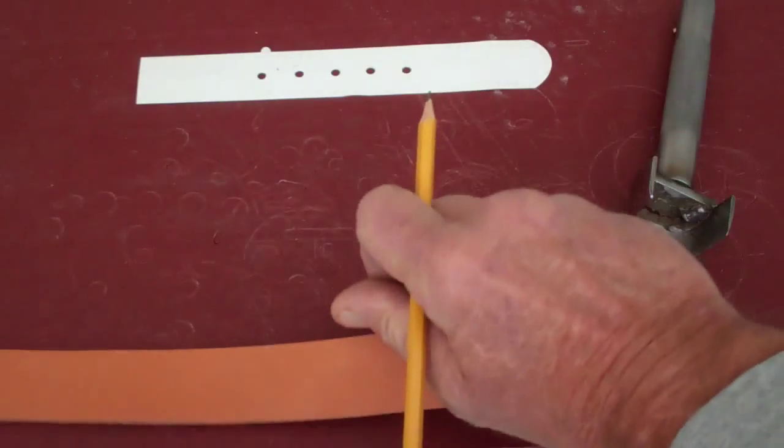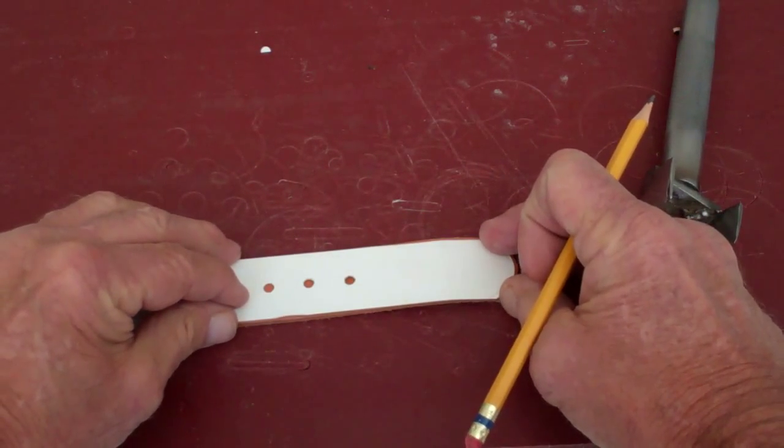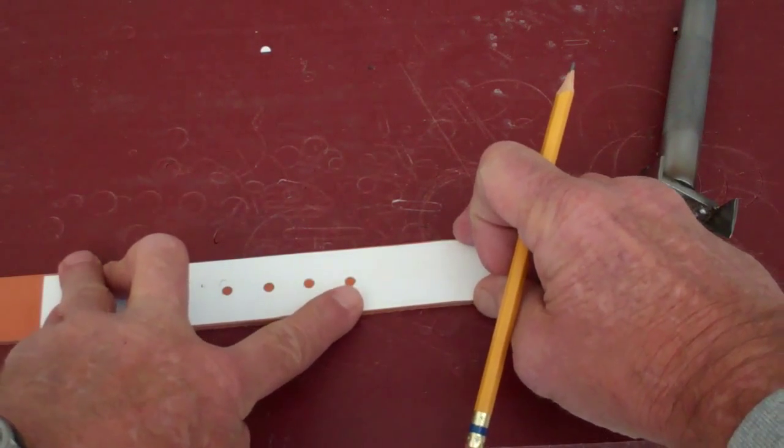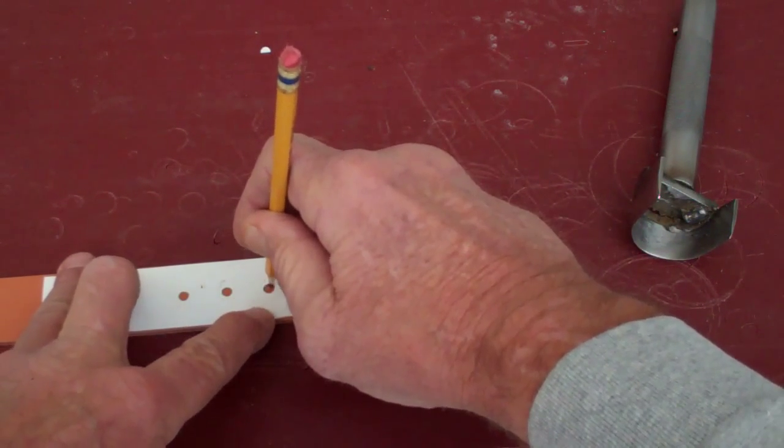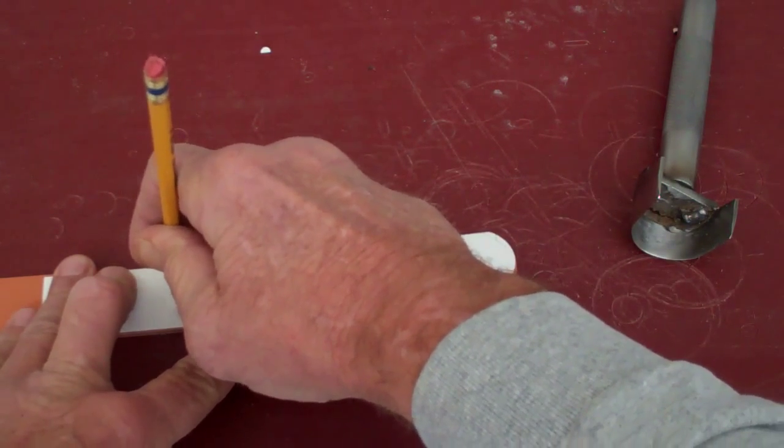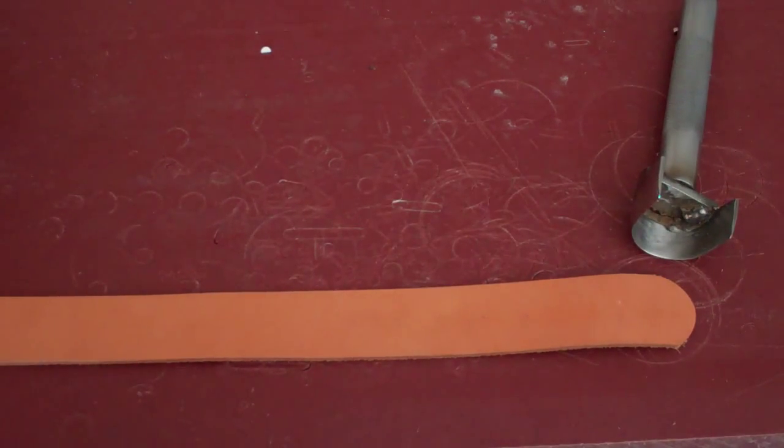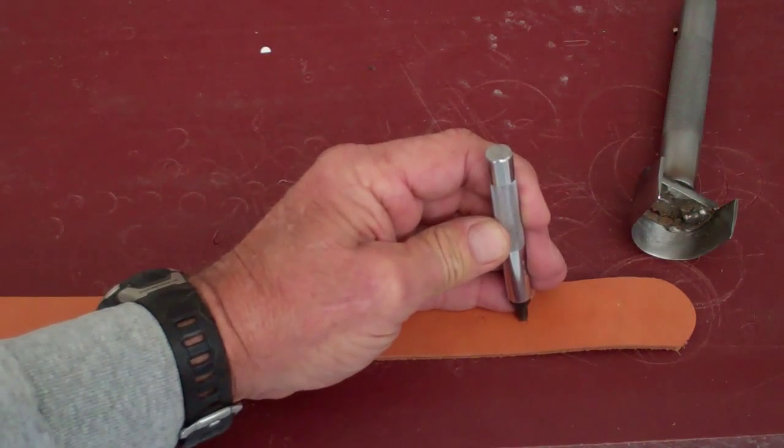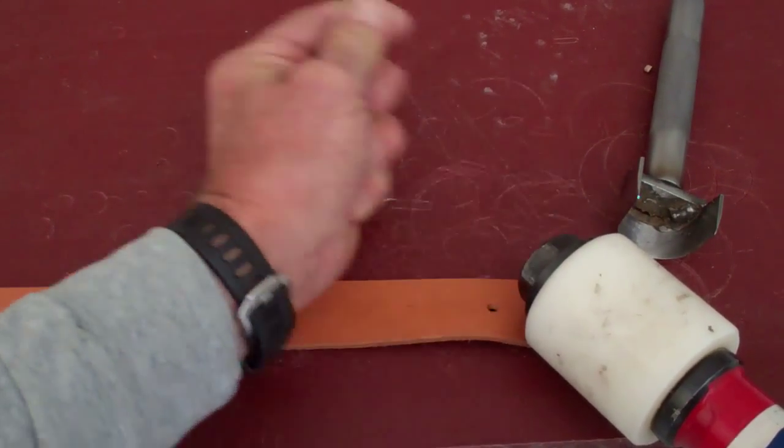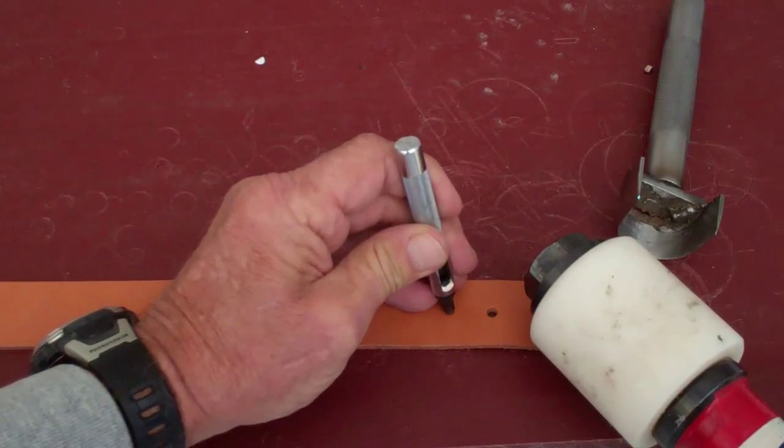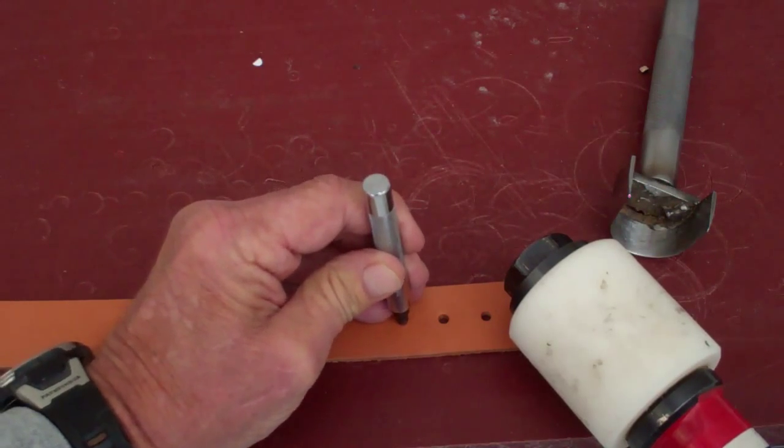And then on the other end, this would be the other end of the belt. I like to put five holes to give yourself an adjustment. Now we'll take our hole punch and go ahead and punch our holes out. Give a little twist and it comes out a little bit easier.